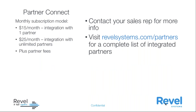In terms of pricing, when you reach out to your sales rep for this — we refer to it as Partner Connect — integration with one partner is $15 a month, and integration with as many partners as you want is $25 a month. Keep in mind that is the Revel side of the costs. Any cost involved with creating an account with a partner or if that partner requires a subscription for their service would be on their side. Contact your sales rep for more info, and for the complete list of partners don't forget revelsystems.com/partners.